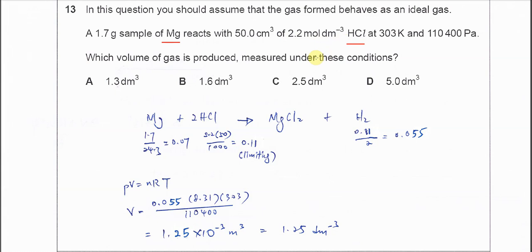For magnesium, 1.7 divided by its molar mass gives you 0.07 moles. For HCl, you use MV over 1000, so you get 0.11 moles. From the equation we know that one mole of magnesium will react with two moles of HCl.